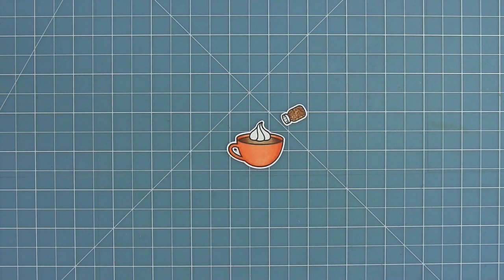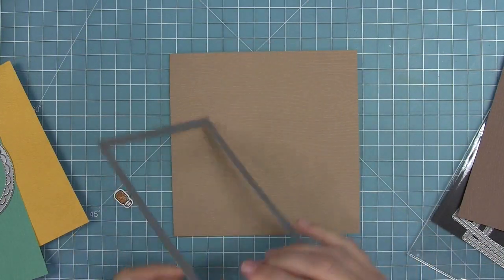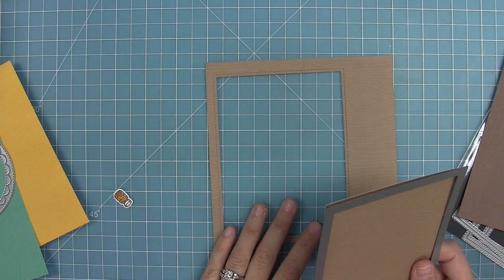So now I'm going to go ahead and make a shaker card with this because I thought it went along with the whole pumpkin spice theme. So I have one of my outside in stitched rectangles here and I'm going to die cut some knock on wood paper with it.